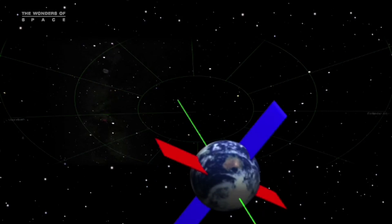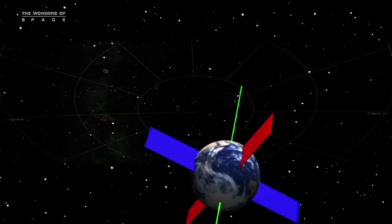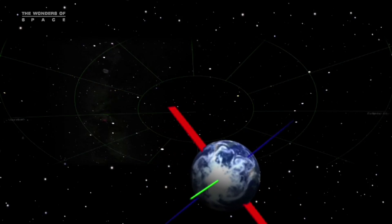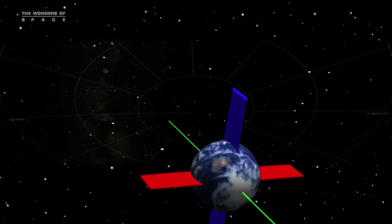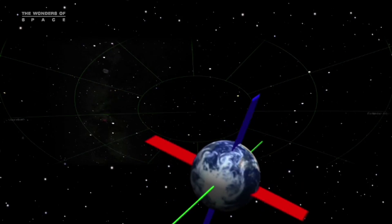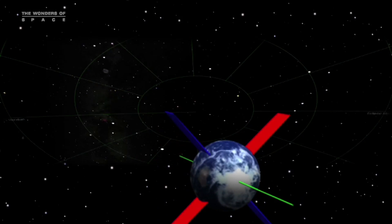Right now, the Earth's axis points towards Polaris. 5,000 years ago, the axis pointed to a star in the constellation Draco. And 12,000 years ago, the brilliant star Vega was the pole star. And because of the 26,000-year cycle, Vega will be the pole star again in 14,000 years.